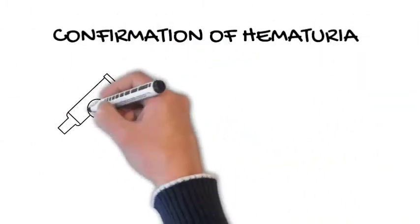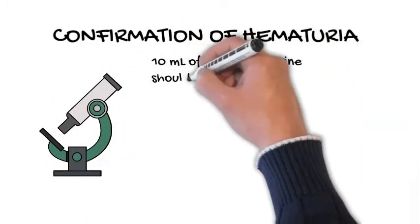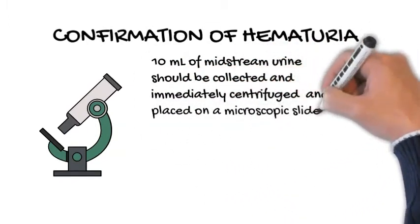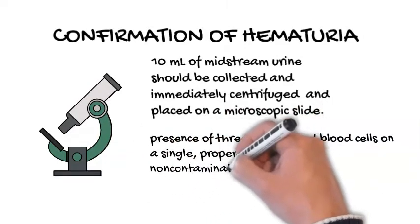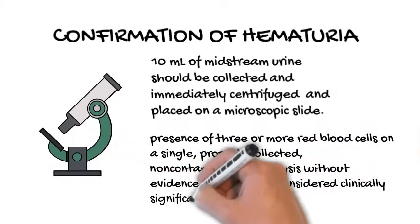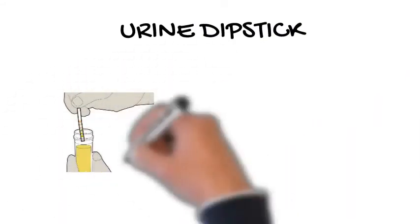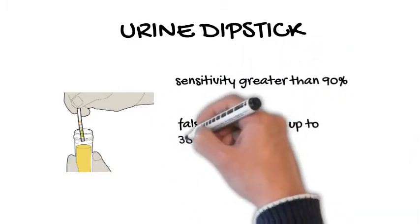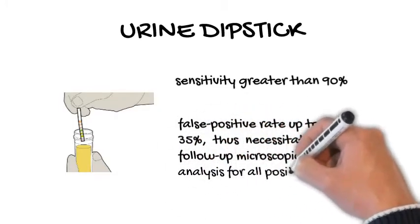Confirmation of hematuria: The most important test in the evaluation of hematuria is a microscopic examination of the urine. Approximately 10 ml of midstream urine should be collected and immediately centrifuged and placed on a microscopic slide. The presence of three or more red blood cells on a single, properly collected, non-contaminated urinalysis without evidence of infection is considered clinically significant microscopic hematuria. The use of a simple urine dipstick test for identifying microscopic hematuria has a sensitivity greater than 90%; however, there is a considerable false positive rate up to 35%, thus necessitating follow-up microscopic analysis for all positive results.